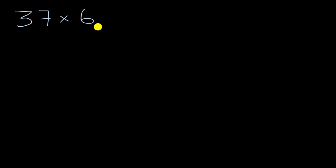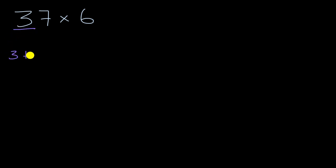Now let's try to come up with a method ourselves. One way to think about it is the different places. This three is in the tens place, so it represents three tens, and this seven is in the ones place, so it represents seven ones. So you can break up 37 as three tens plus seven ones, and then we're going to multiply that times six.